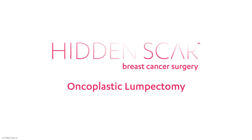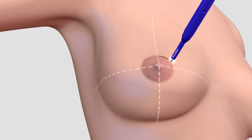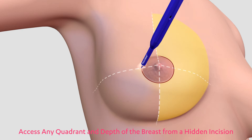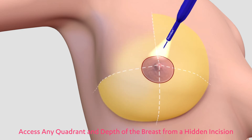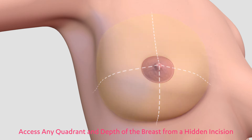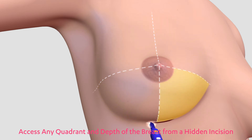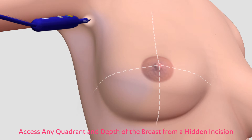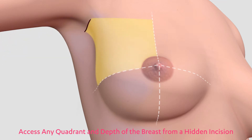Hidden scar lumpectomy utilizes oncoplastic techniques via a hidden scar, thus combining optimal oncologic and aesthetic outcomes. The resulting scar is often not or barely visible, leaving patients with no visible reminder of their surgery, cancer, or risk of cancer. Invuity's Intelligent Photonics enables breast-conserving surgery in any quadrant of the breast, at any depth, from a hidden incision.